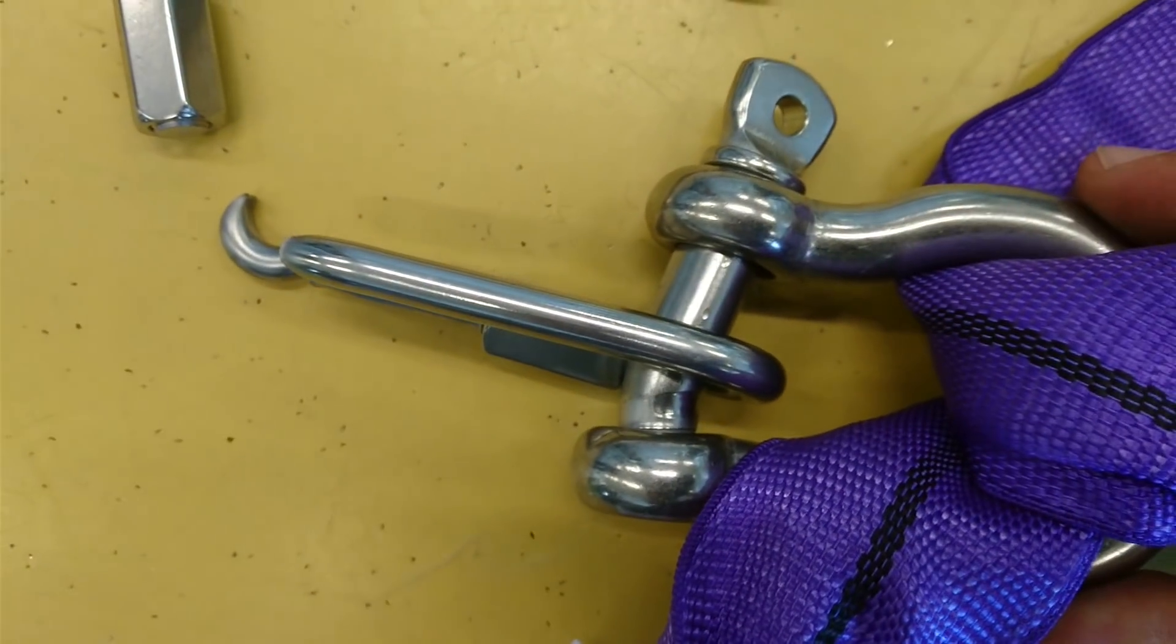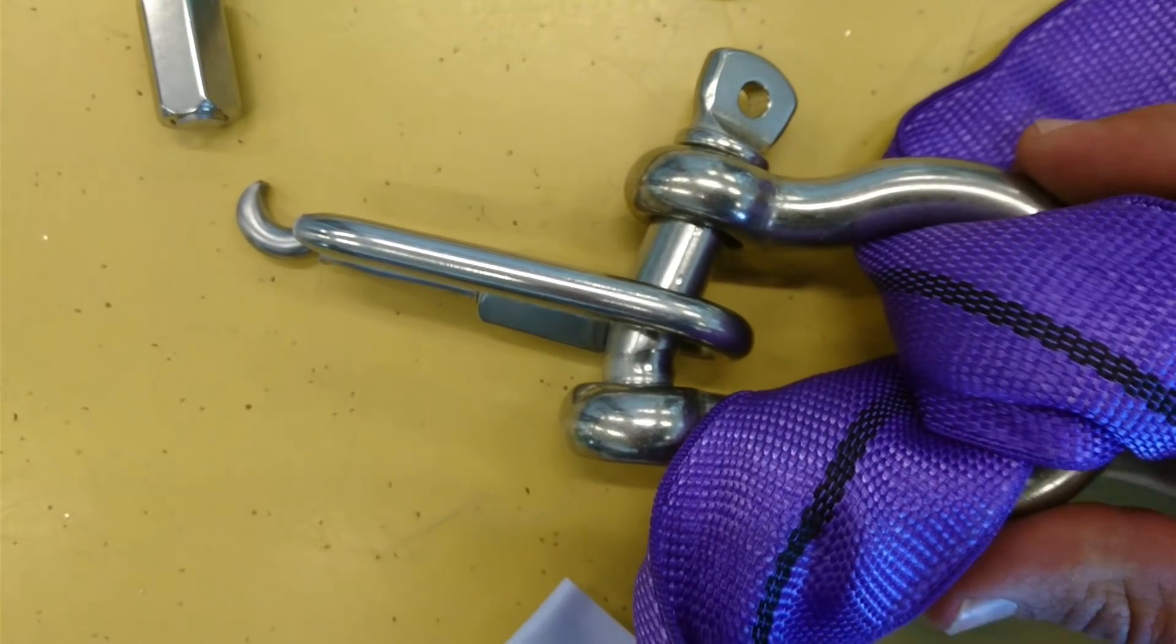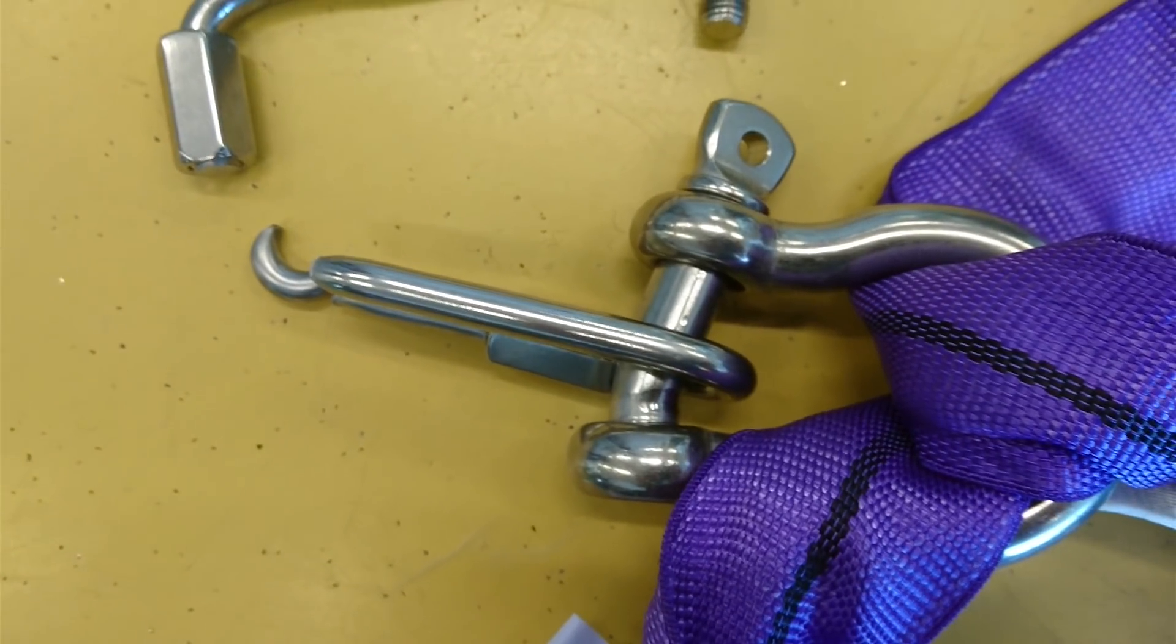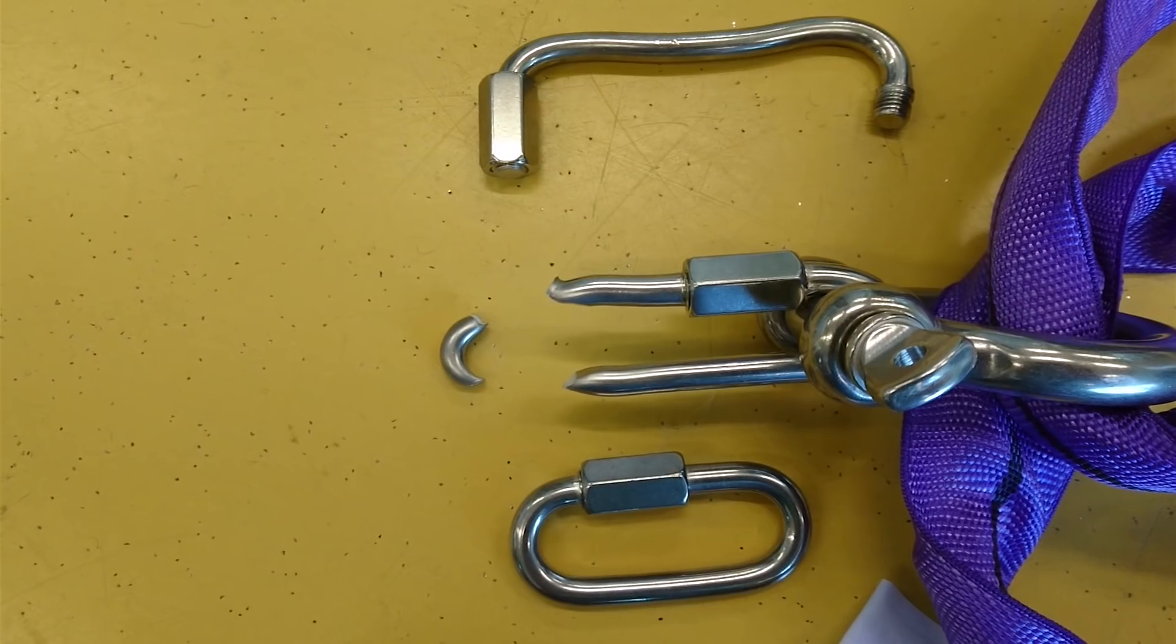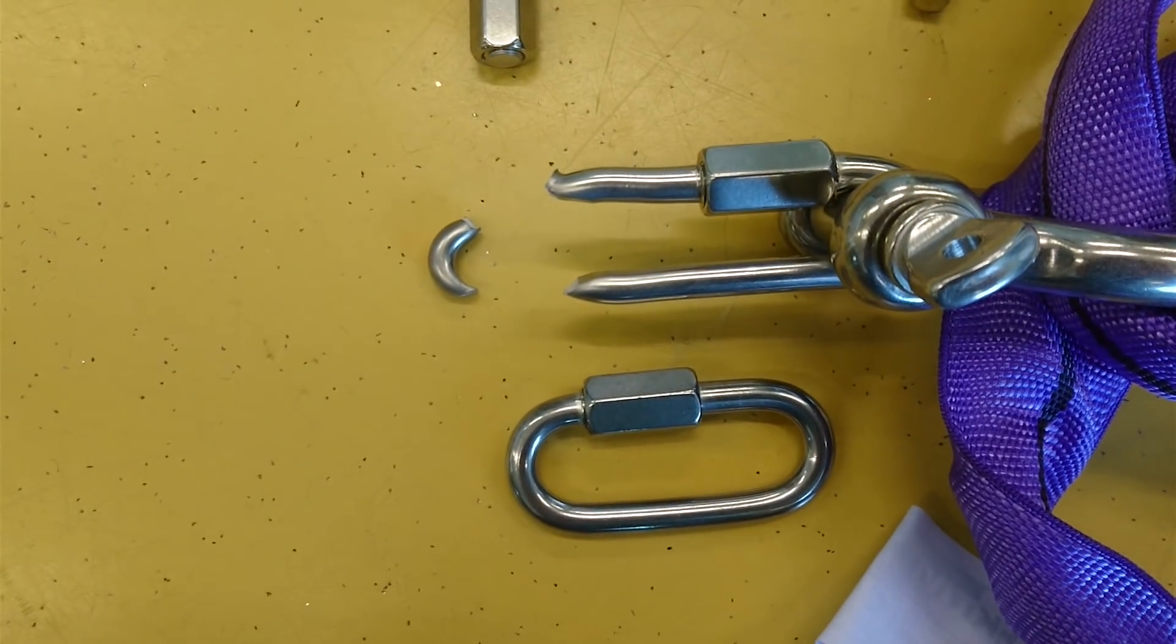It also totally bent the 14-millimeter shackle. Here we're comparing the shape of the destroyed quick link with the new quick link.